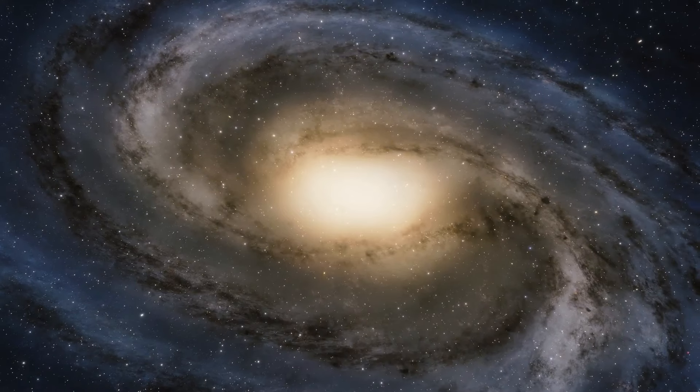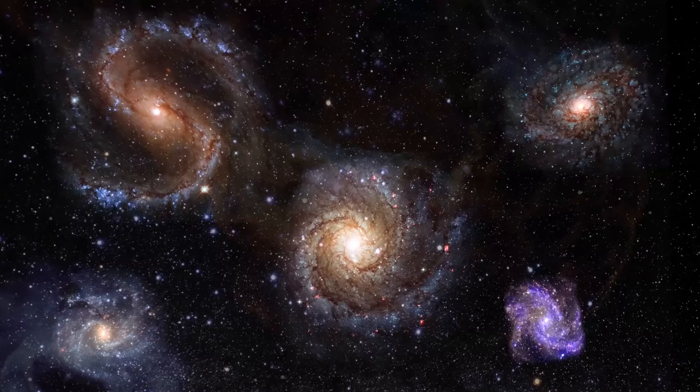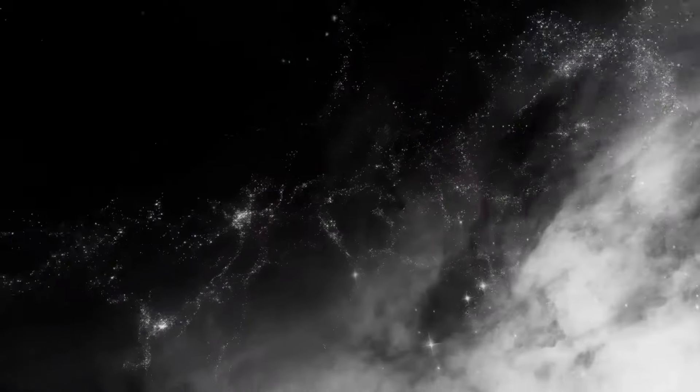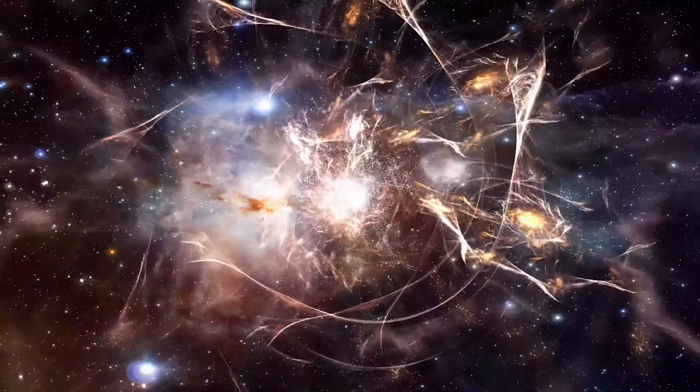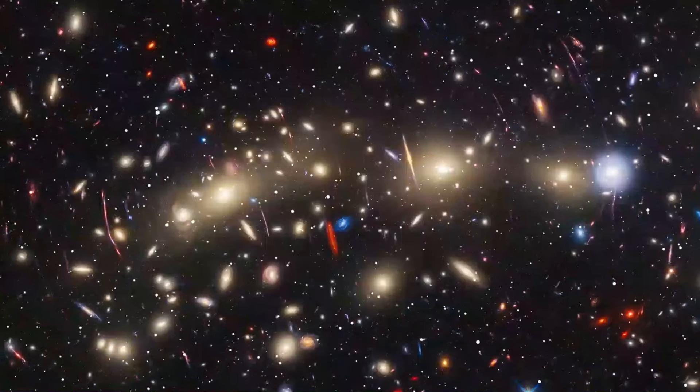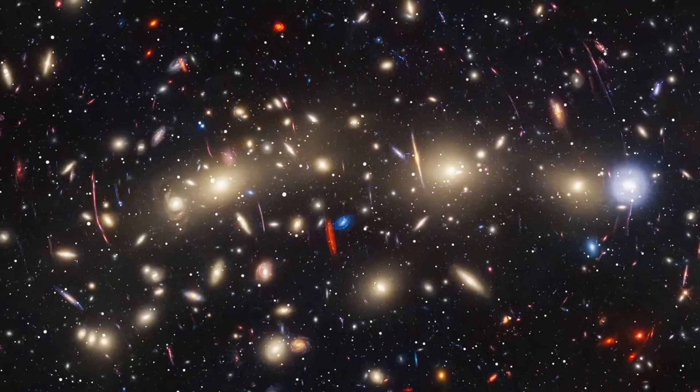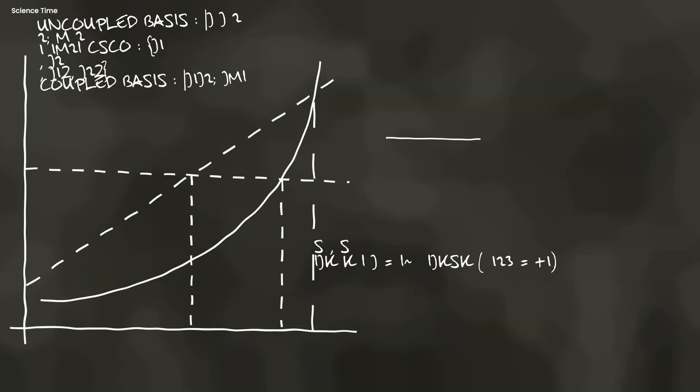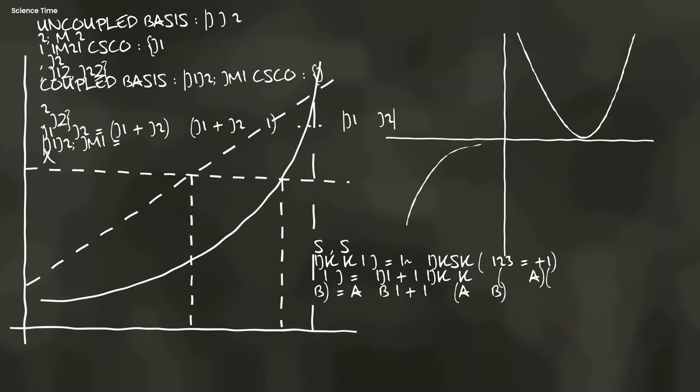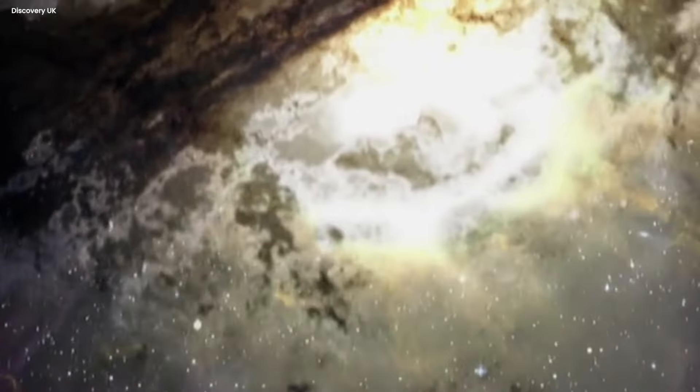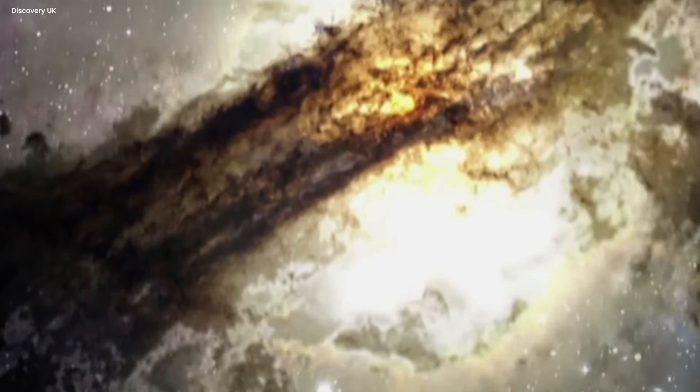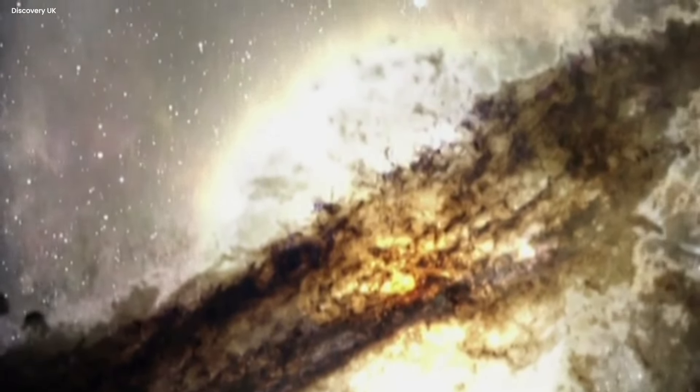Just like with the Milky Way, the galaxies in the Coma Cluster seemed to be moving way too fast for the gravity of all the visible matter to hold them in place. By all accounts, the cluster should have been flying apart. But here it was, a giant, stable clump of galaxies defying the laws of physics as we understood them. This was another major clue that something unseen was lurking out there in the universe, influencing gravity in a big way.